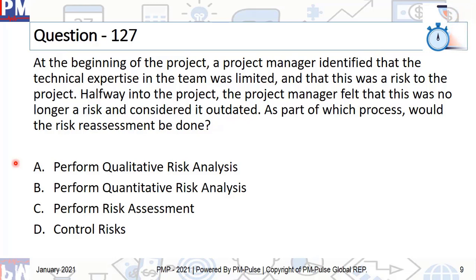The correct answer is D — control risk. Monitor risk or control risk is the process where you actually become smarter. You figure out those risks which you did not identify and then they occurred. So you have to make sure that you update your risk register or reprioritize it. You also come to know about those risks which are no longer relevant as the project progresses, and so you put them as in effect — they have passed their due.